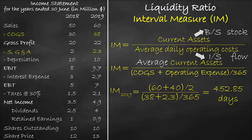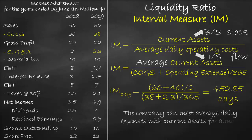As we said earlier, the unit of the interval measure is a day. This means that the company can meet average daily expenses with current assets for almost 452.85 days. The higher the interval measure ratio, the better.